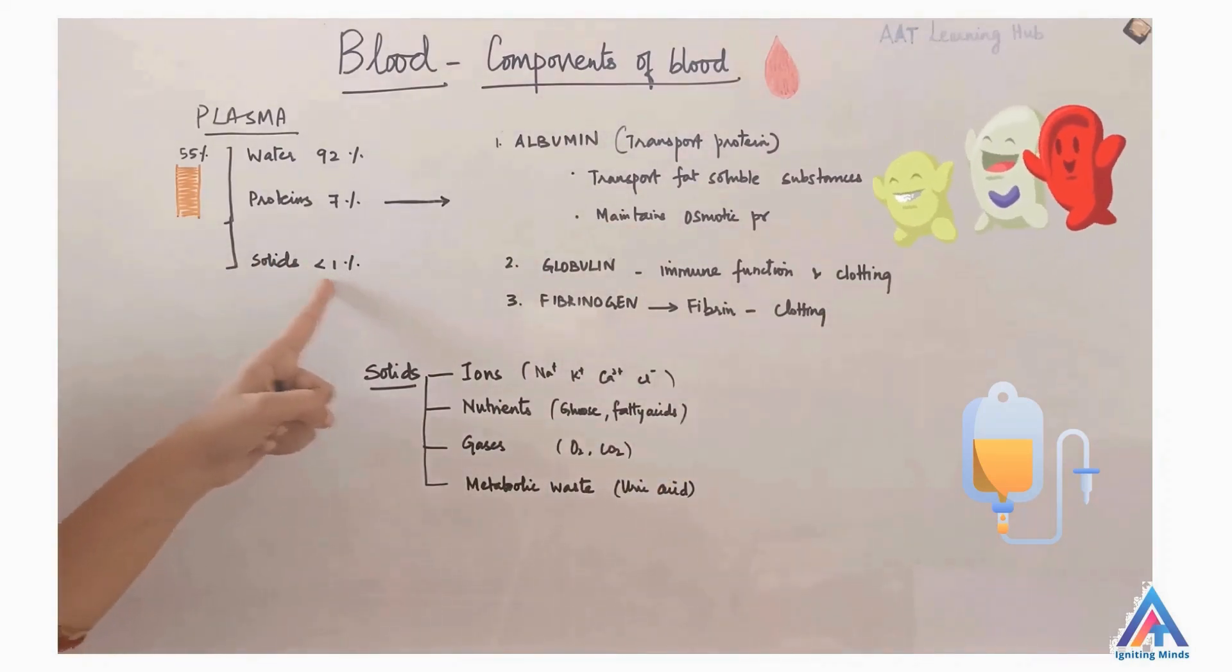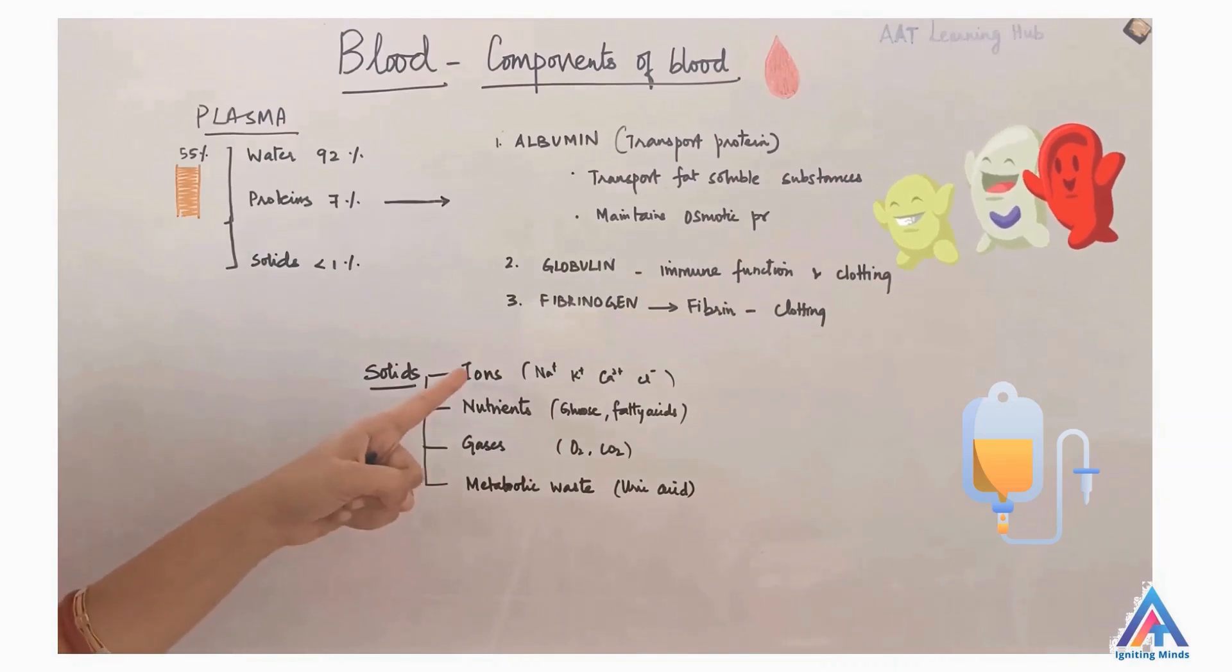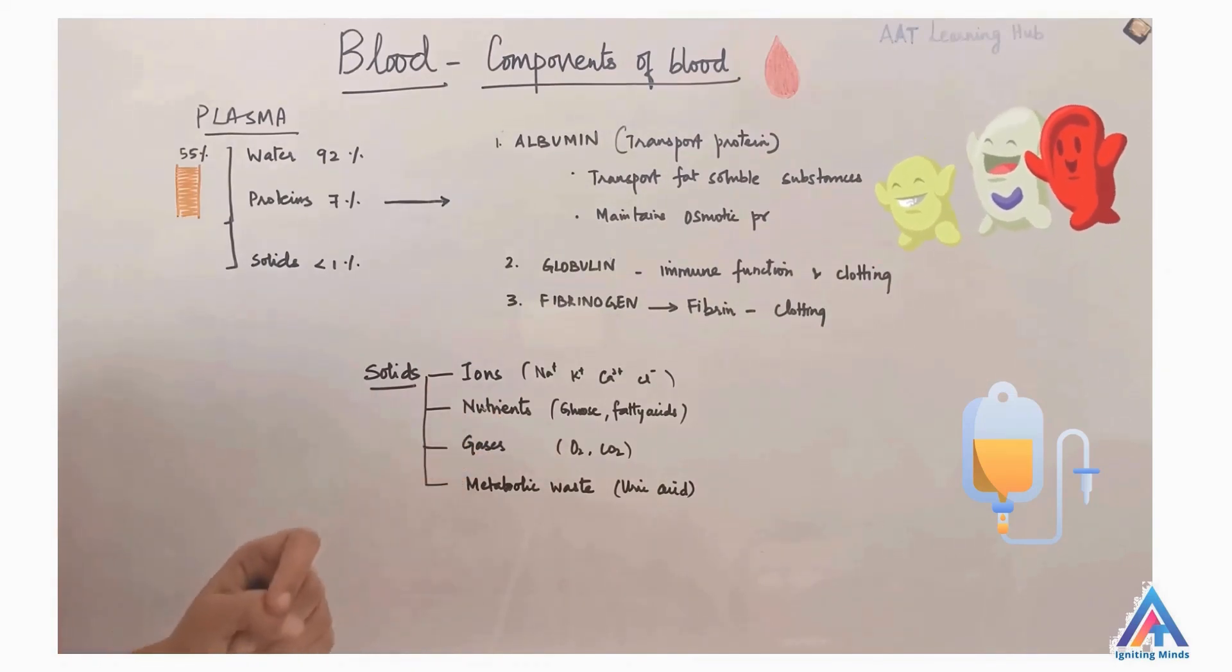Next, the solids of plasma like ions: sodium, potassium, calcium, chloride, nutrients like glucose, fatty acid, gases like oxygen, carbon dioxide, and metabolic waste like uric acid. So these are present in the plasma.